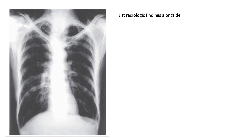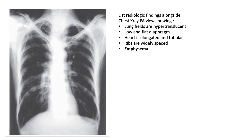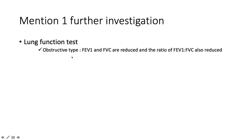Here we see beautiful hyperinflated, hyperlucent lung fields with low, flat hemidiaphragms bilaterally. The heart appears elongated and tubular, and the ribs are widely spaced — classic features of emphysema. A further investigation is lung function testing to clinch the diagnosis of obstructive airway disease: the FEV1/FVC ratio will be reduced below 0.7, and severity is determined by the FEV1.